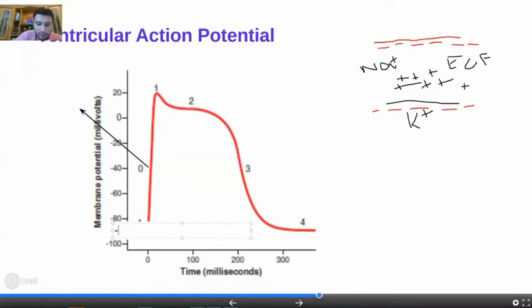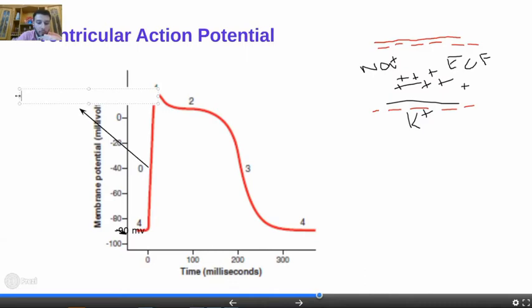Phase zero — what is its significance? Phase zero is due to the opening of fast voltage-gated sodium channels. The spike, the uplift phase, or the depolarization phase is caused by the rapid influx of sodium. Sodium is more abundant outside the cell, so when these fast voltage-gated sodium channels open, sodium rushes into the cell interior rapidly.